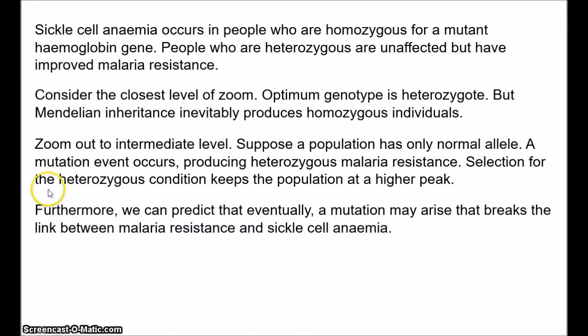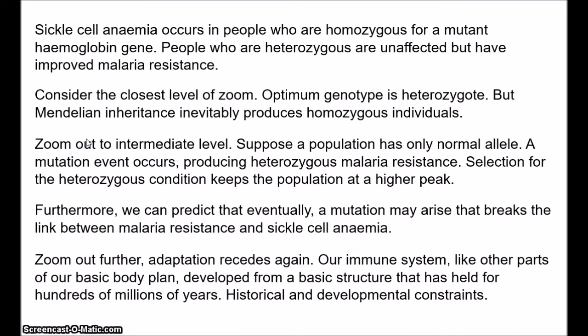If we zoom out further, however, adaptation recedes again. Because we could imagine a species much like us but whose immune system is completely differently structured so that it can more easily defeat malaria. There are general historical and developmental constraints on species. Our immune system is one part of a general body plan based on a basic structure that has been around for hundreds of millions of years, and there may not be any particular reason to think that it is an optimum structure. Wilkins and Godfrey-Smith suggest then that to a large extent, biologists have been talking past each other. Evolutionary theory was largely built on organismal biology — examining populations over intermediate timescales — and at this intermediate scale, selection is indeed a uniquely powerful force. But once you specify the grain of analysis, the disagreements about adaptationism will largely subside.